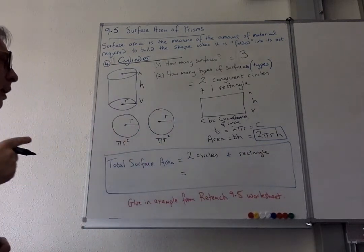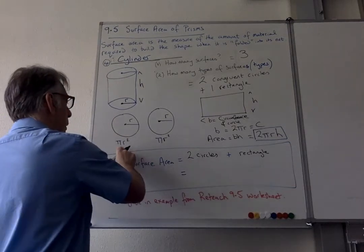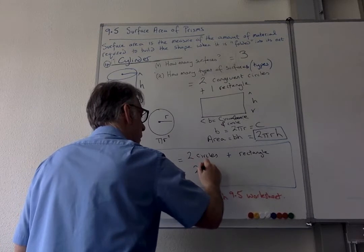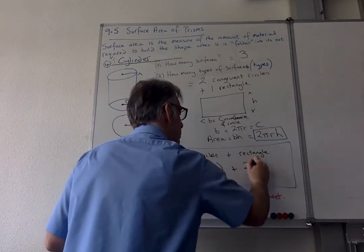So we can build formulas that are more complicated later. So we want two circles, so it's πR² and πR². So it's two lots of πR² plus the rectangle, which is 2πRH.